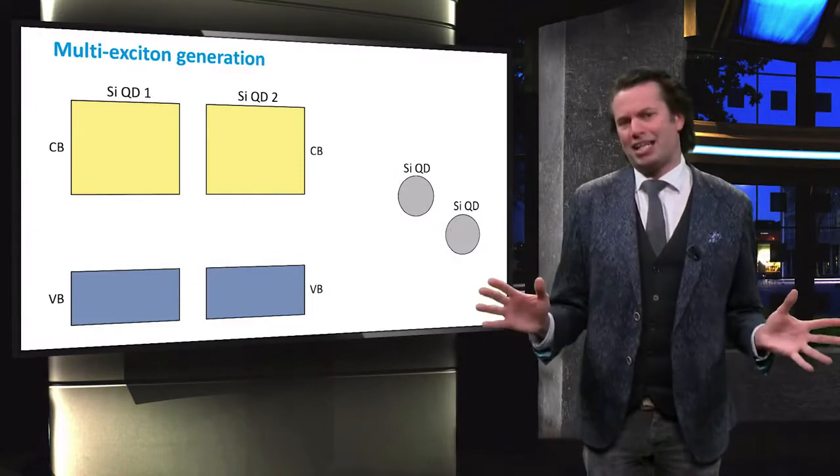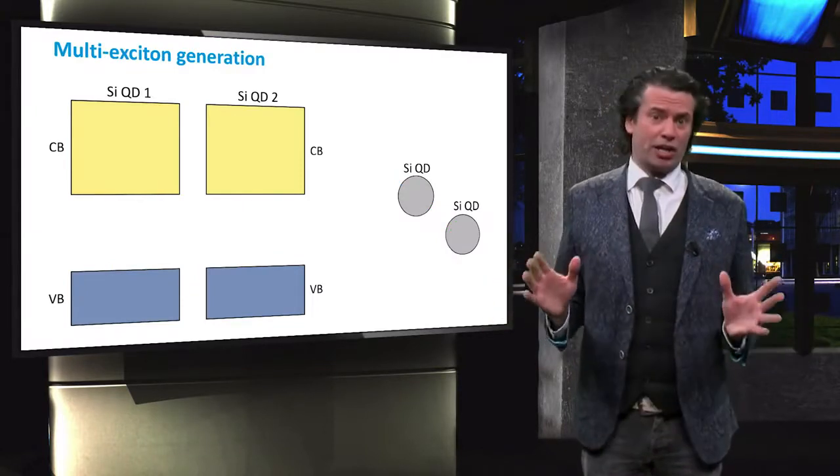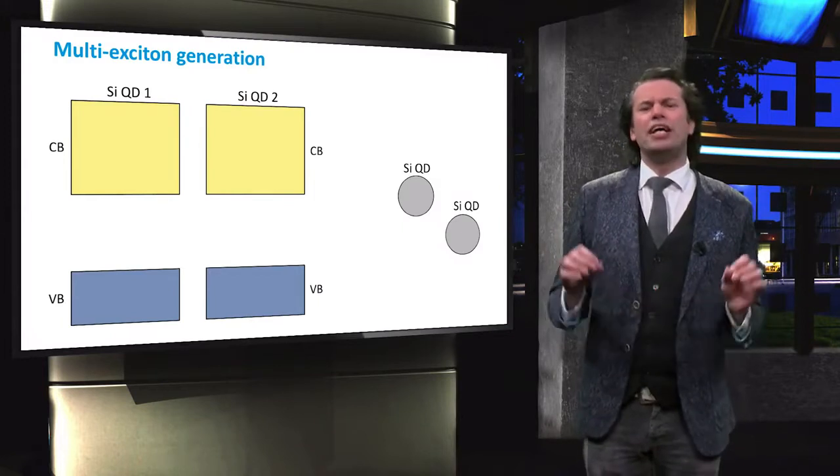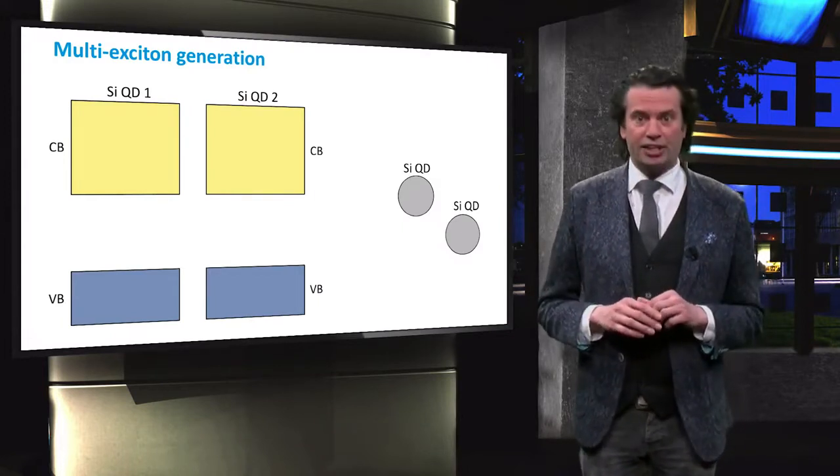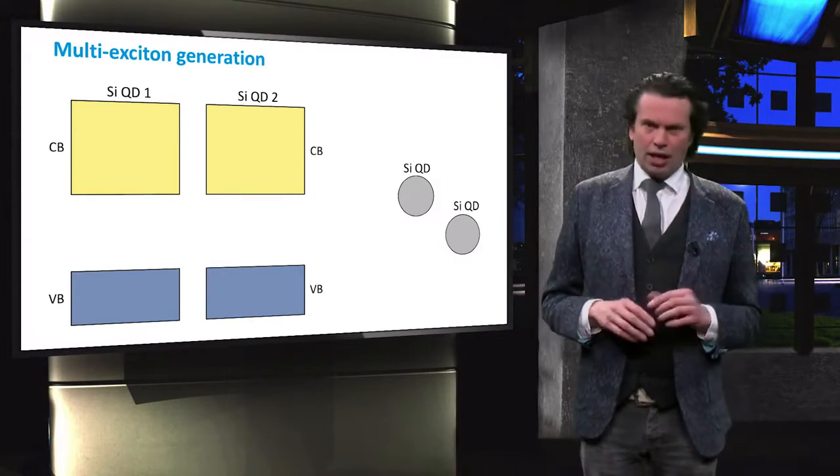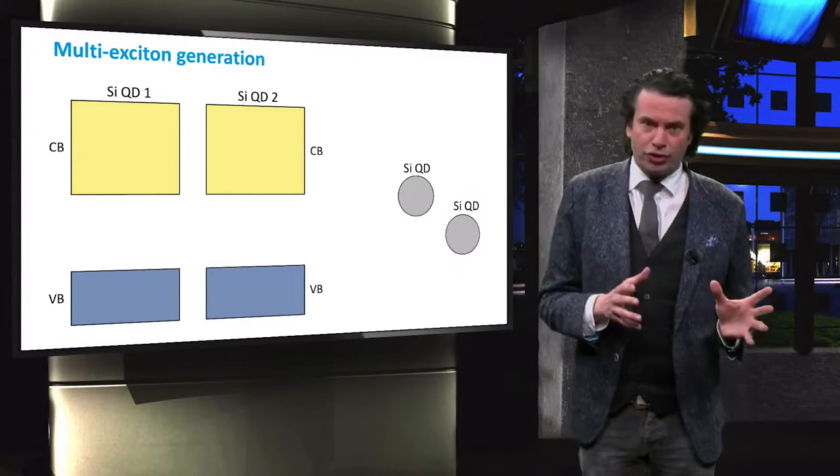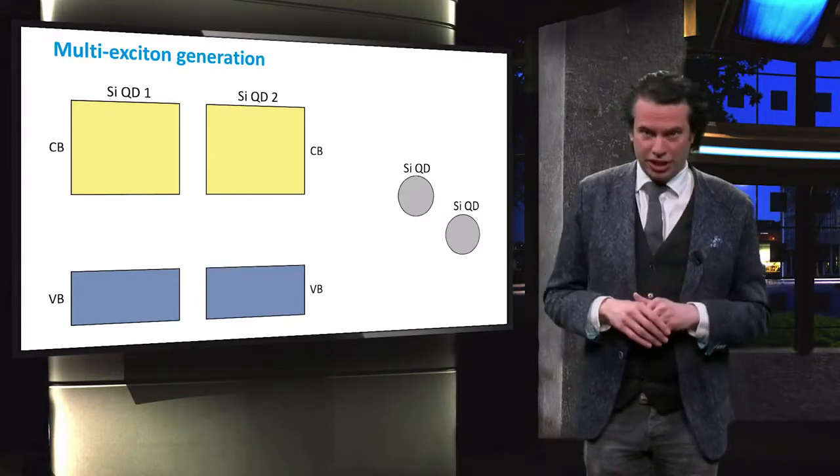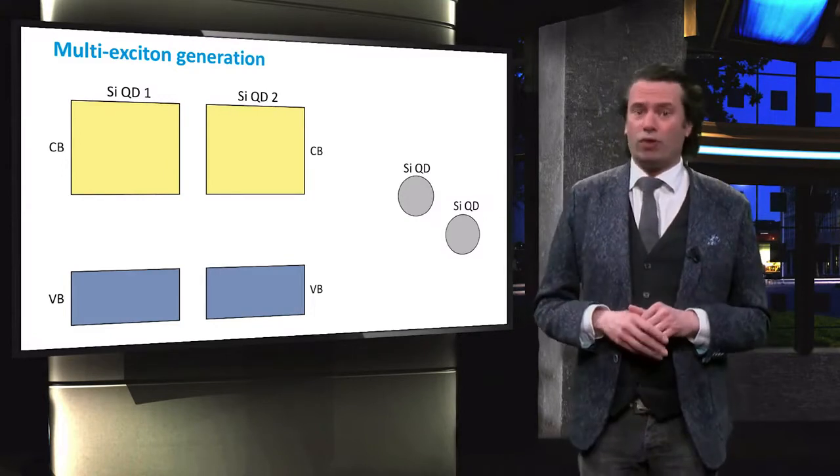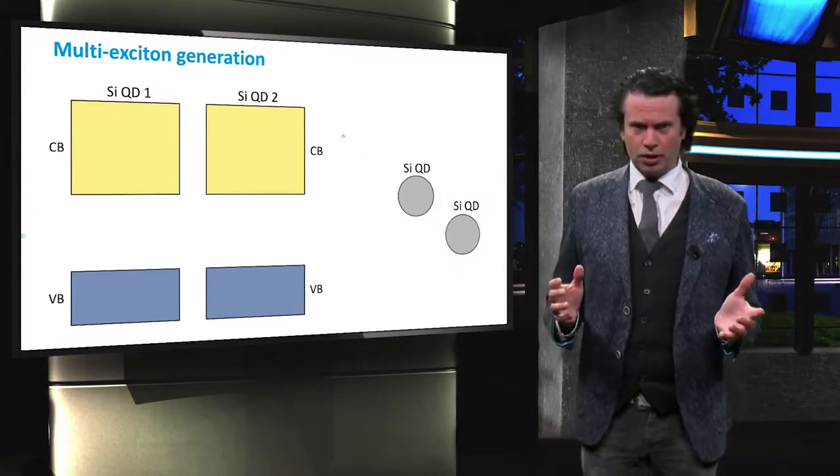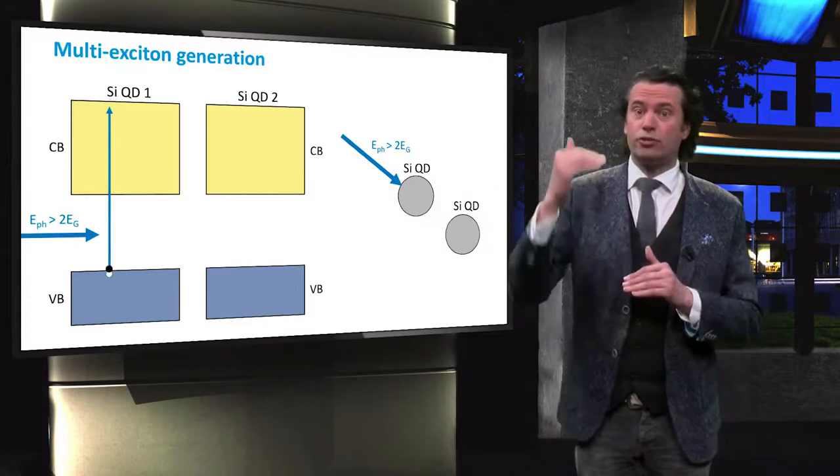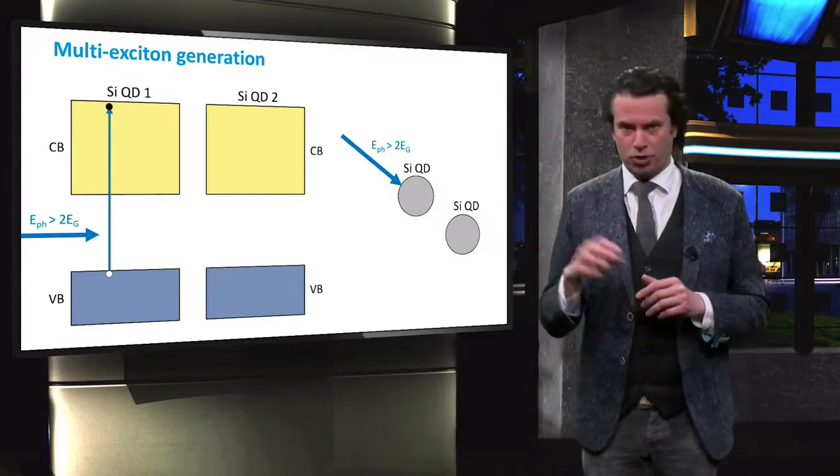Another approach to enhance the charge carrier excitation by a single highly energetic photon is called multi-exciton generation. Like with spectral downconversion, multiple exciton generation can be realized with quantum dots. Again, a high energy photon excites an electron high into the conduction band of the first quantum dot.